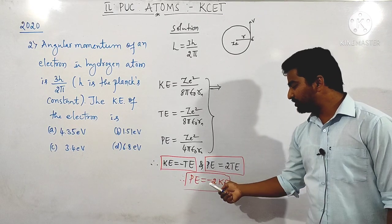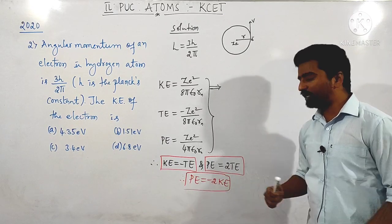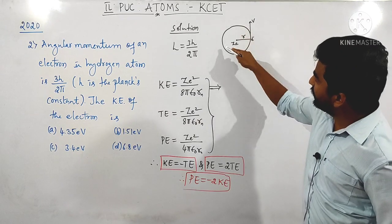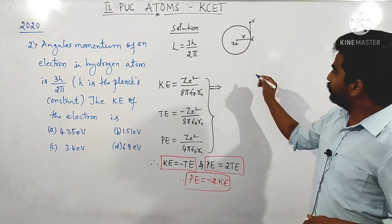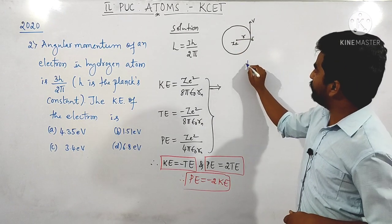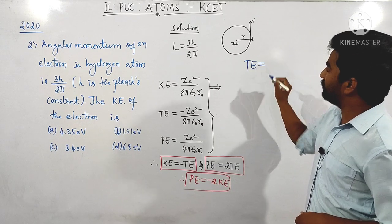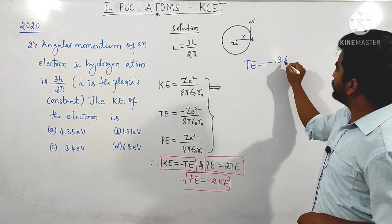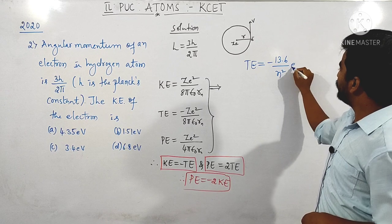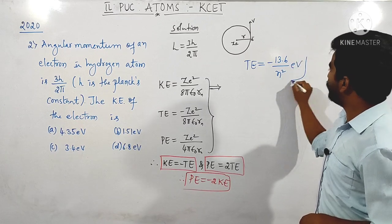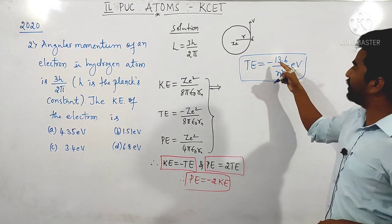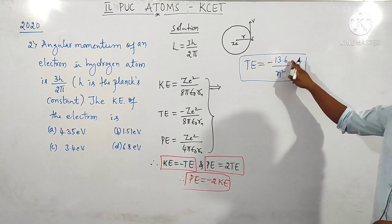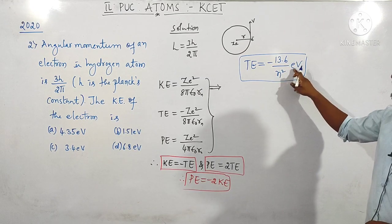Total energy is equal to −Ze²/(8πε₀R). Potential energy is Ze²/(4πε₀R). There is a relation between these three physical quantities: kinetic energy equals minus times the total energy, and potential energy equals 2 times the total energy, so potential energy equals minus 2 times the kinetic energy. The total energy formula for an electron in hydrogen atom is −13.6/n² eV.